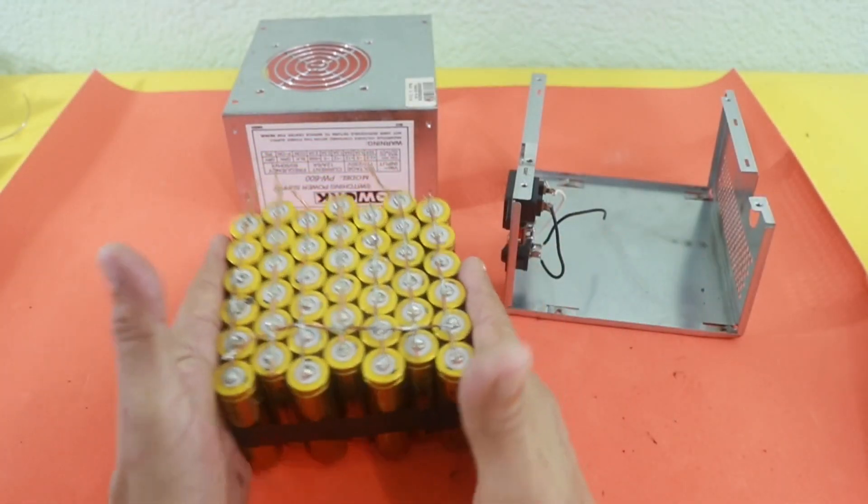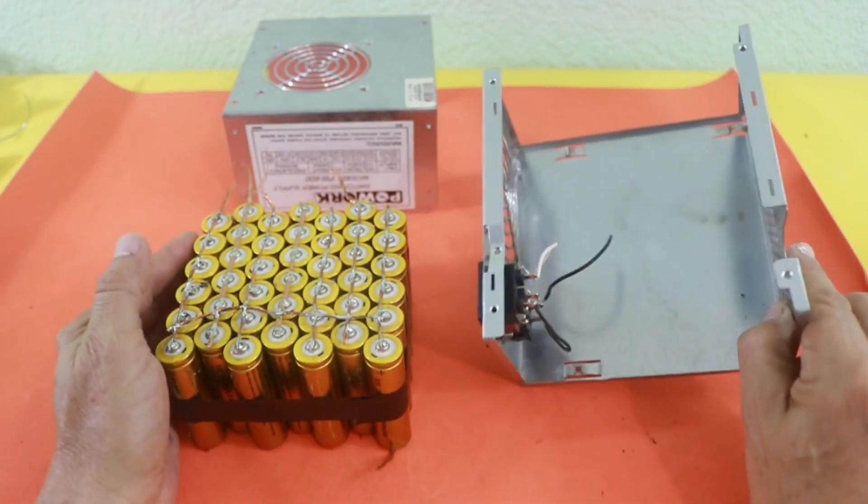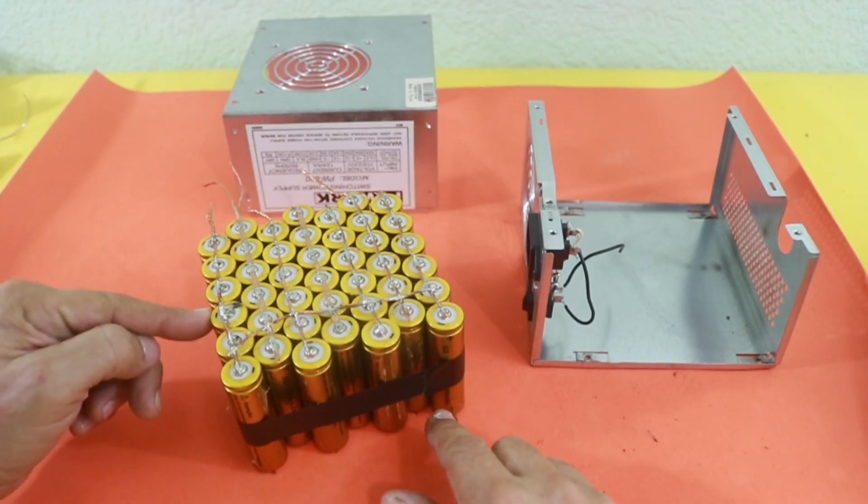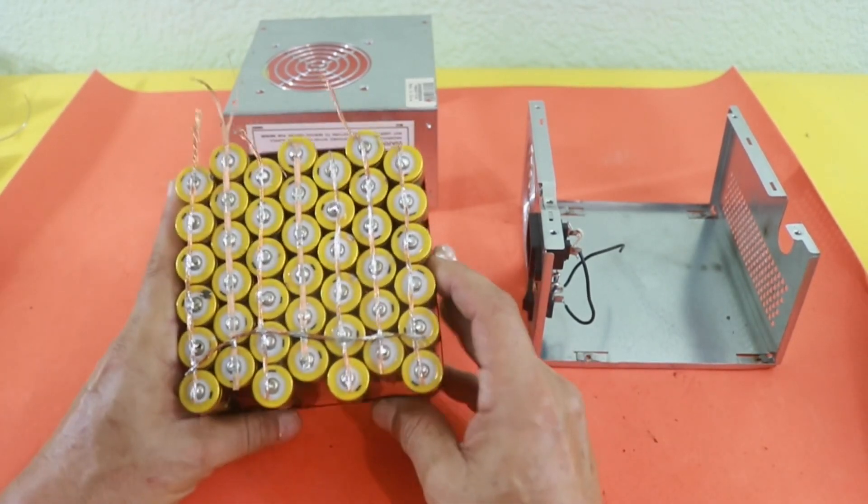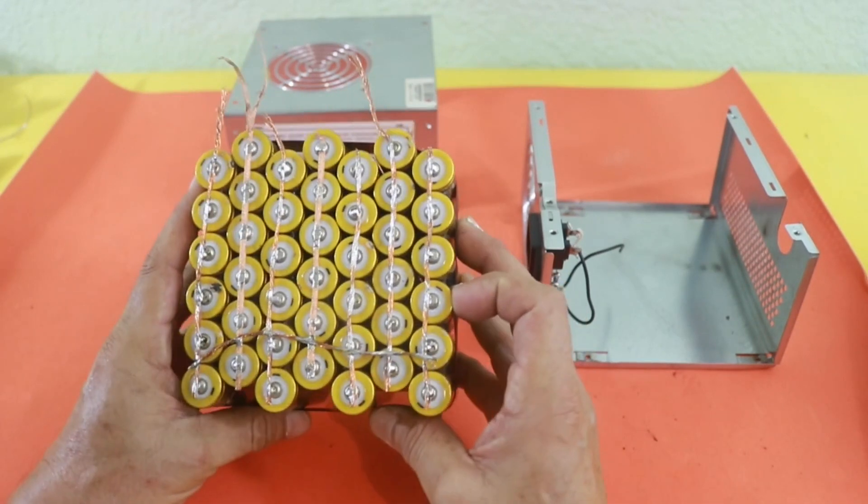All the batteries are now connected in parallel. Finally, there is enough space for seven groups of six batteries, so we have a total of 42 batteries or cells in parallel.